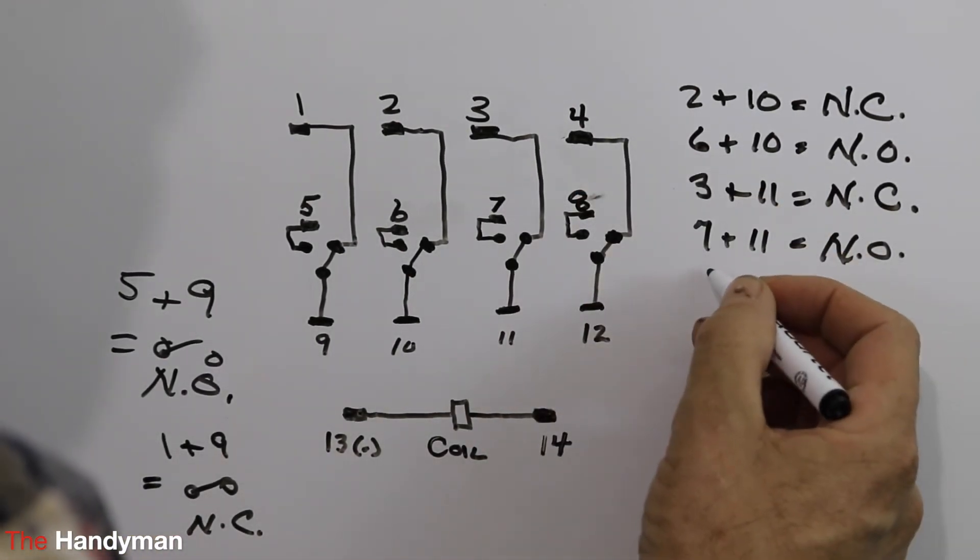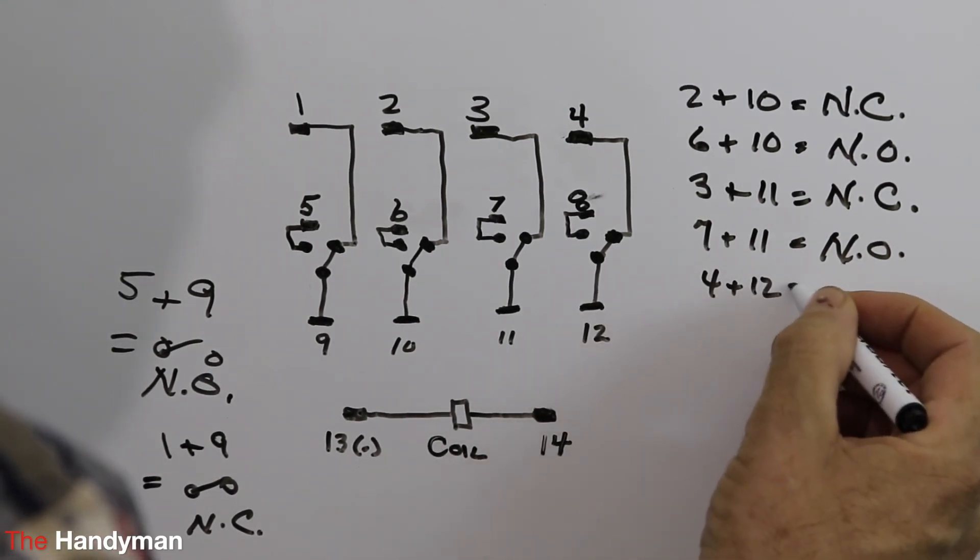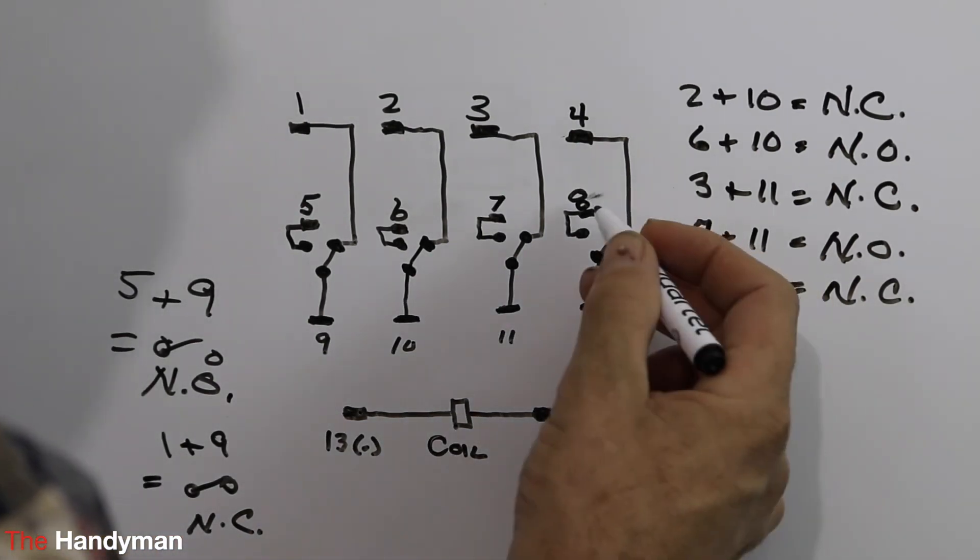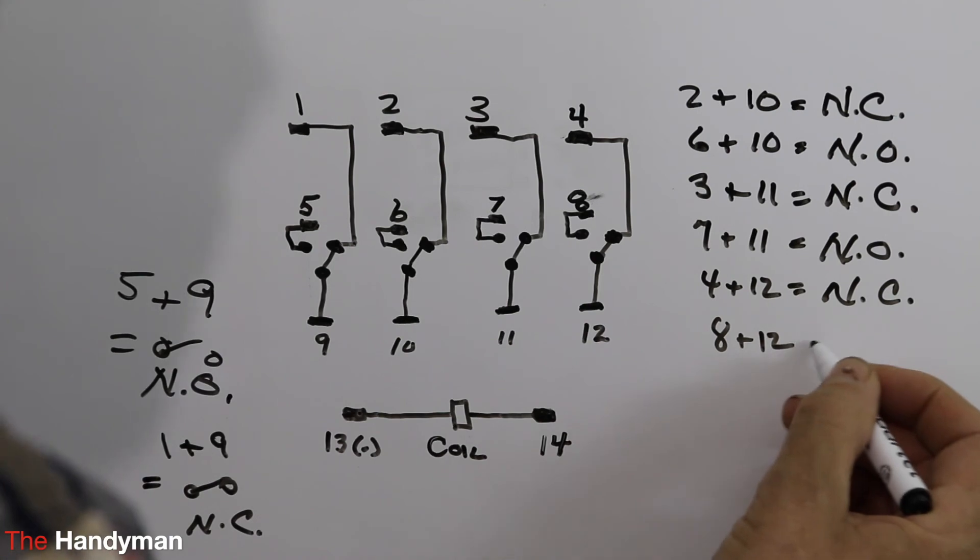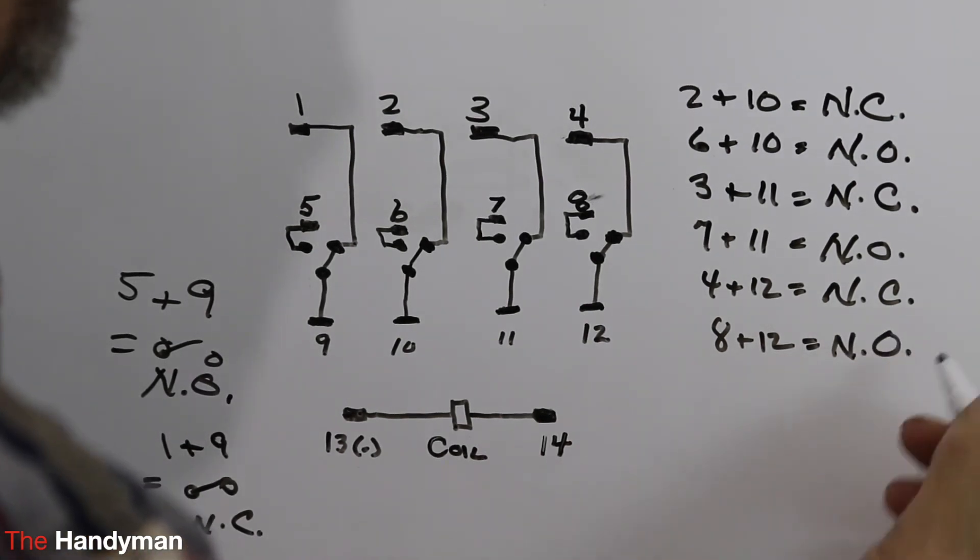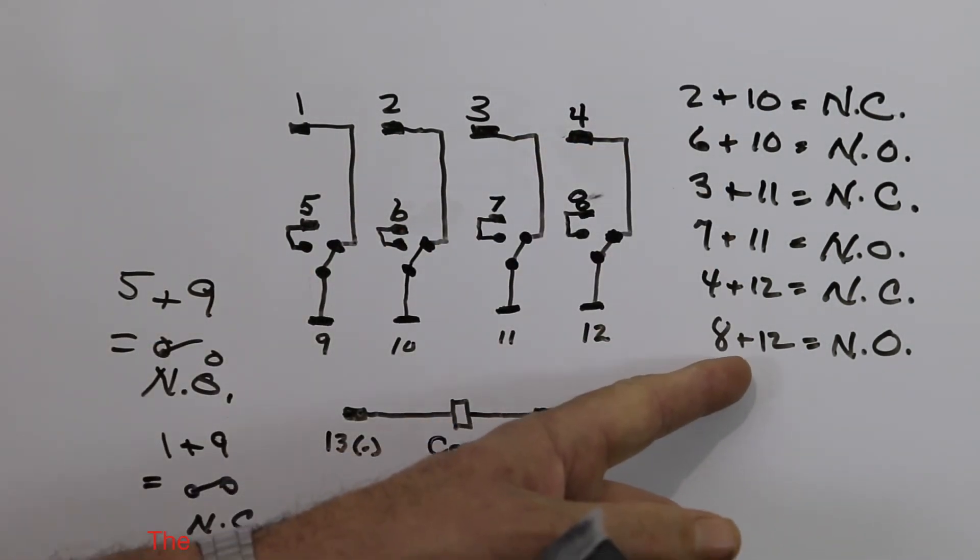And on the next one, pin four and twelve, normally closed. Pin eight and pin twelve is normally open. So there are all your connections if you buy this exact relay.